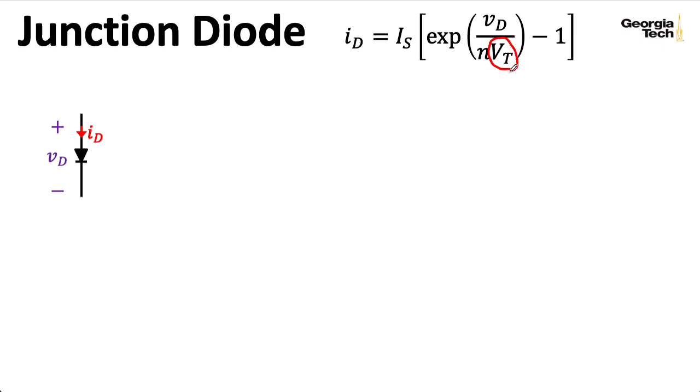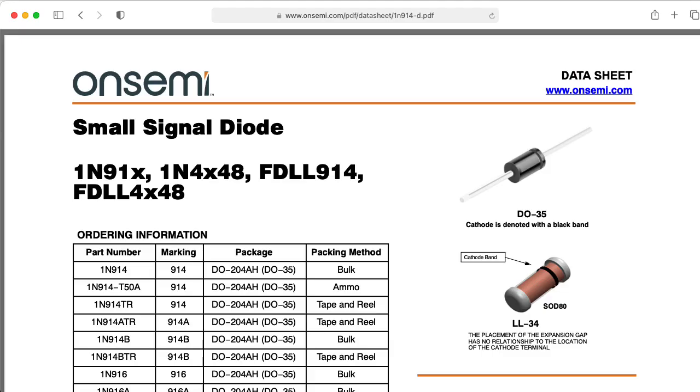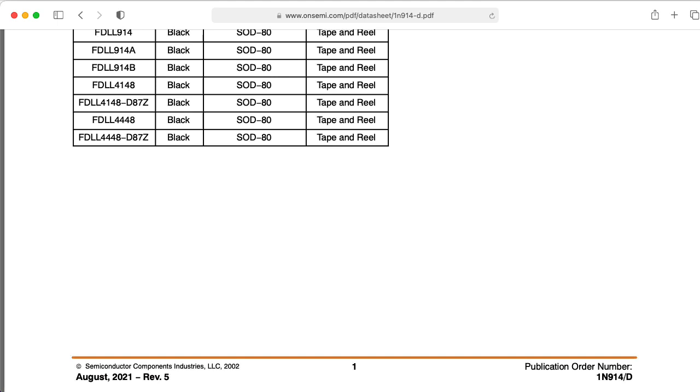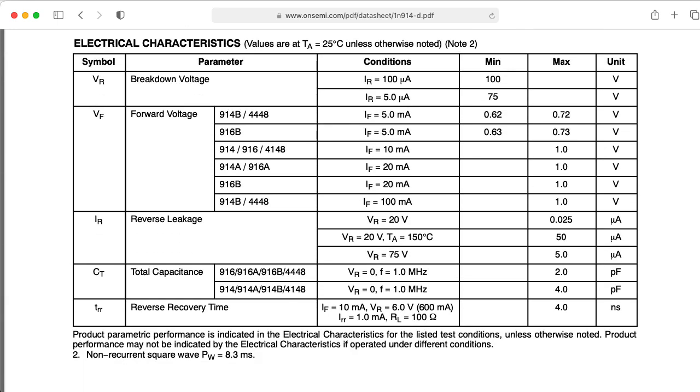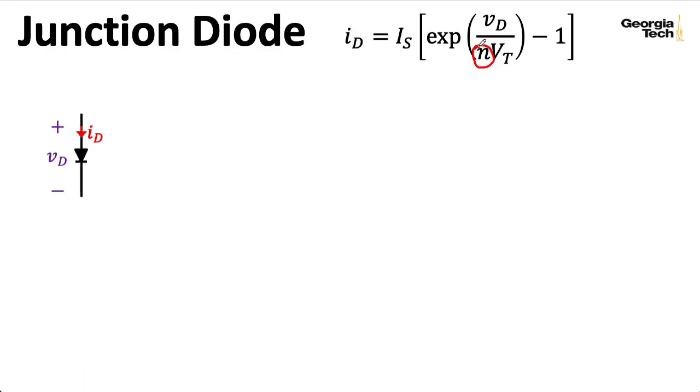VT is called the thermovoltage. It's another parameter that also changes with temperature. And in here is something called an emission coefficient. For something like the diodes on an integrated circuit that are really bipolar junction transistors wired to act as diodes, this is pretty close to one. That's ideal. For the diodes like a 1N4148 or 1N914 that you would pull off the shelf, this is probably something closer to 2.